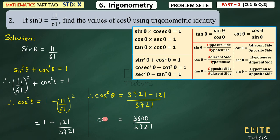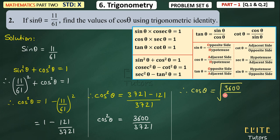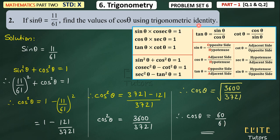This whole is 3600 upon 3721. But this is cos square theta value, not cos theta. So cos theta needs a square root. Therefore cos theta equals the square root of 3600 upon 3721, which is 60 upon 61. So the final answer is cos theta equals 60 upon 61. We can also do this with the triangle method, but if the exam has said identity method, you must use this method. If you do it with the triangle method, you may get the answer wrong.